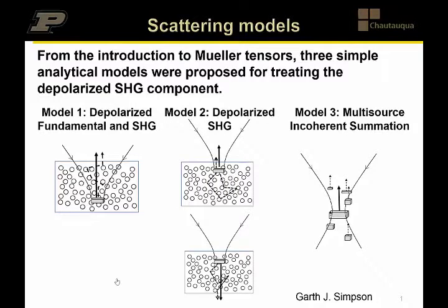Finally, the last model we'll consider is one in which the incoherent nature from second harmonic generation arises not from optical scatter per se, but from the generation of numerous sources of SHG that are phase-incoherent.